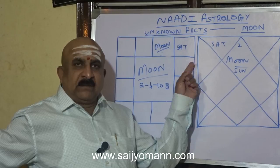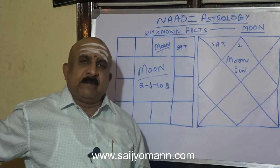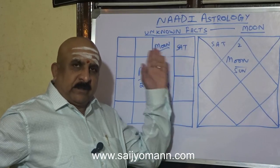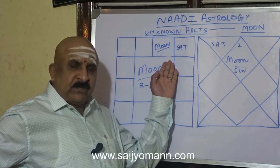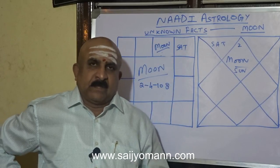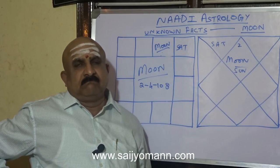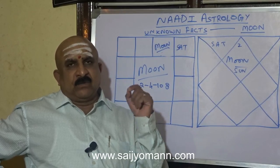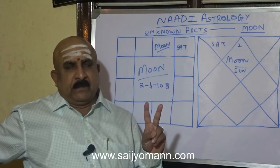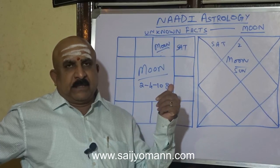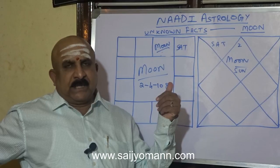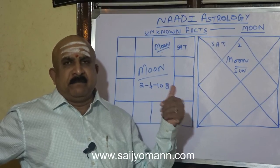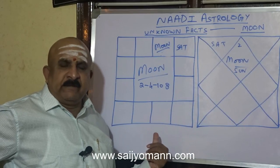If Saturn is placed in the Moon's 2nd house, it means the Moon — the mother — and the father: Moon's kutumbasthana. They are a known family to the mother. The father of the native was known before marriage to the lady. If Saturn is in the 2nd house from Moon, the husband's family will be known before marriage — husband here meaning the mother's husband, the father of the native.